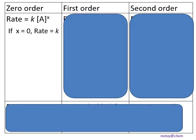In this slide, we are going to discuss how the order of reaction affects the rate of reaction. If the order of reaction is zero, that means the power x equals 0. No matter what the concentration of the reactant is, any value to the power of 0 equals 1, so the rate will always equal k.